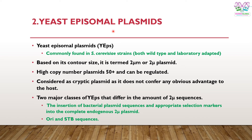The second type is yeast episomal plasmids. They are commonly found in Saccharomyces cerevisiae strains, both wild type and laboratory-adapted strains. Based on its contour size, it is mainly known as the two-micron plasmid. These plasmids are high copy number plasmids — the copy number can go beyond 50 and can also be regulated. This plasmid in yeast is considered a cryptic plasmid as it does not confer any obvious advantage to the host, as is the case with bacterial plasmids. There are two major classes of yeast episomal plasmids, differing in the insertion of bacterial plasmid sequences and appropriate selection markers into the complete endogenous 2-micron plasmid.